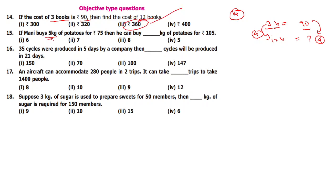Money buys 5 kg potatoes for Rs.75. The cost of 5 kg is Rs.50.